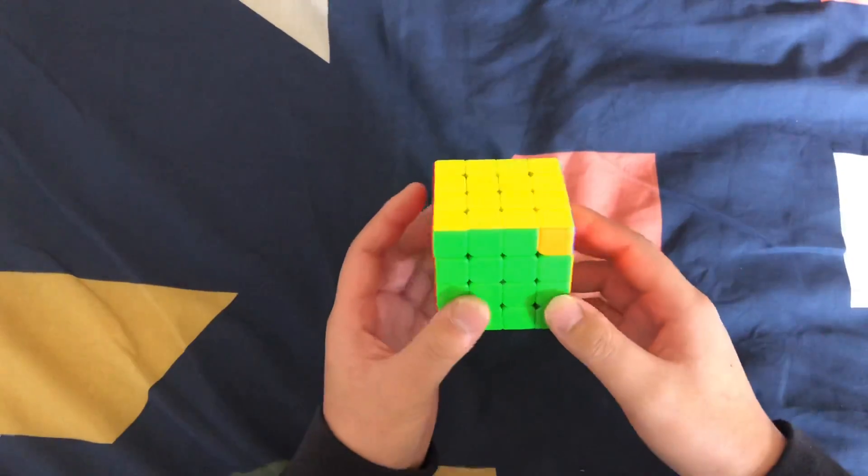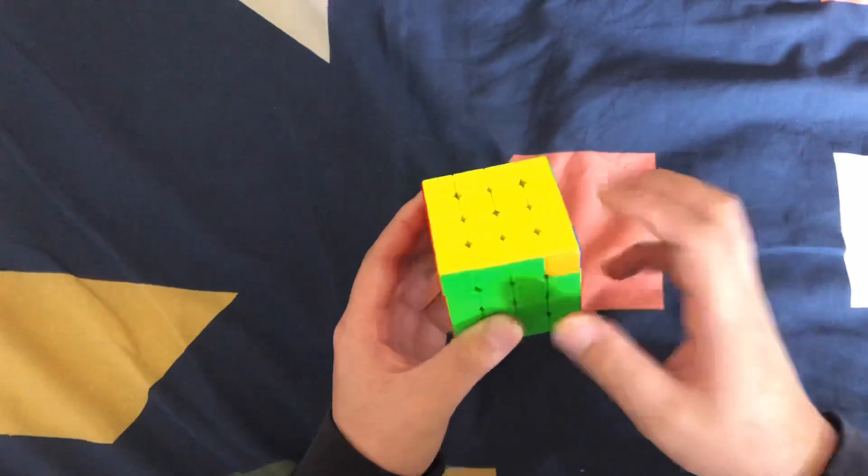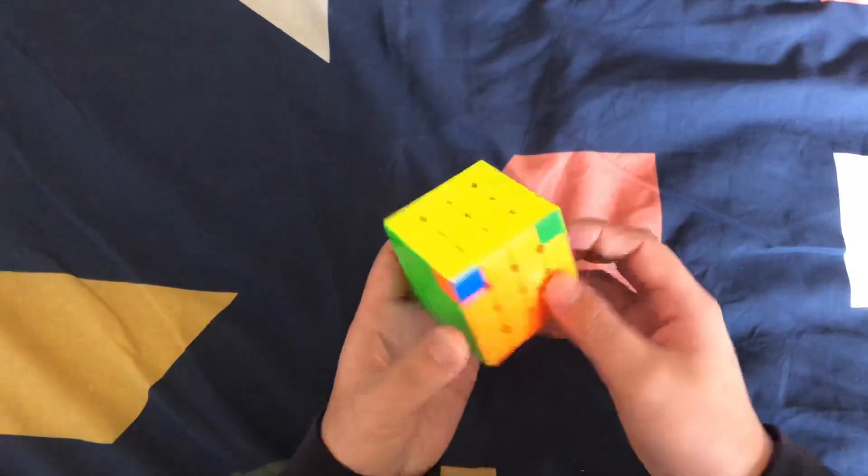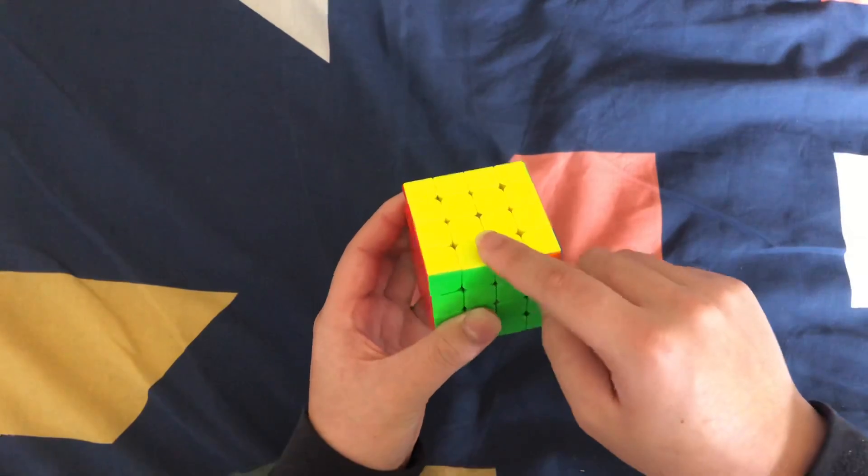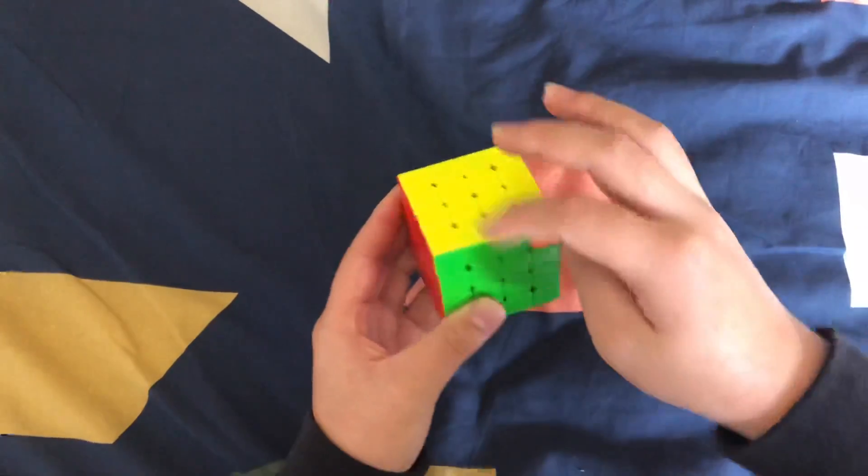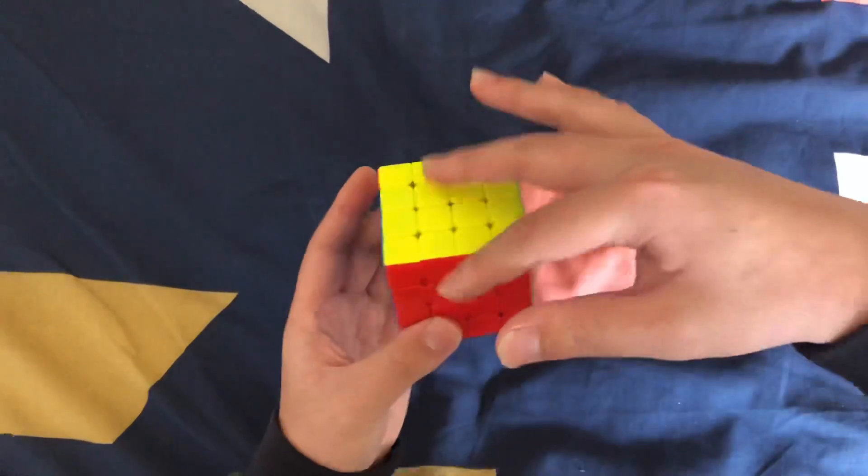One little cool tip I can give you is when you have PLL parity, you can force it into a good PLL after you've solved it. So for example, in this case, if I do the parity algorithm or the moves here, I'll get a not-so-good case. I'll get an F-perm. But if I do it here, I'll get a T-perm because these two edges swap. I'll show you right now.